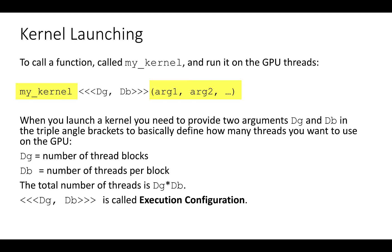The difference with the normal function invocation is that we now provide two additional arguments between the triple angle brackets. These two additional arguments are the number of thread blocks, dg, and the number of threads per block, db. These two values constitute the execution configuration.